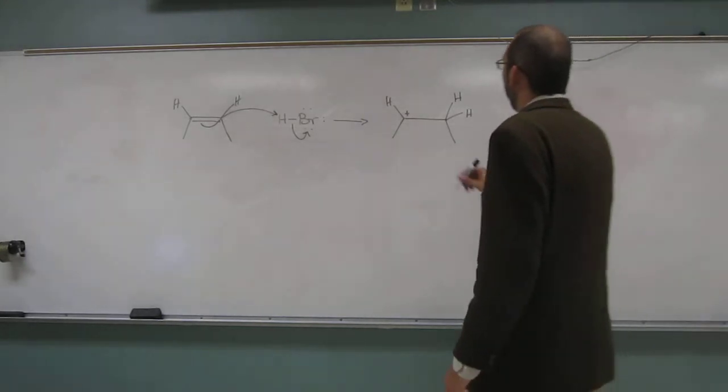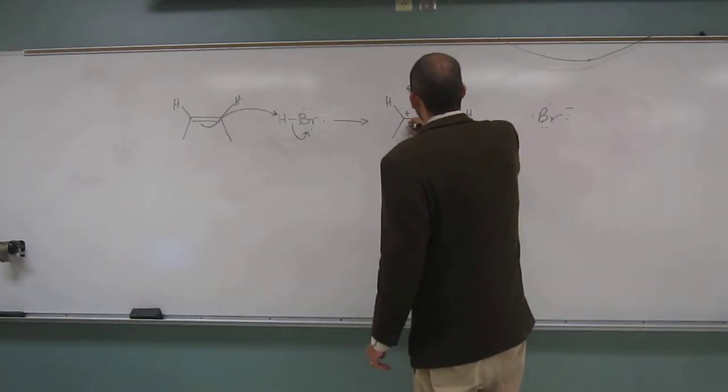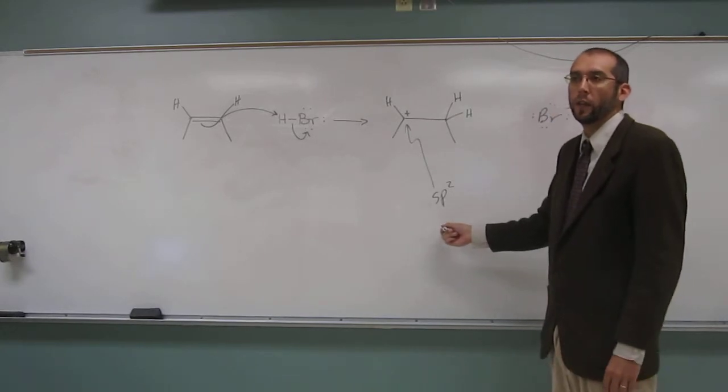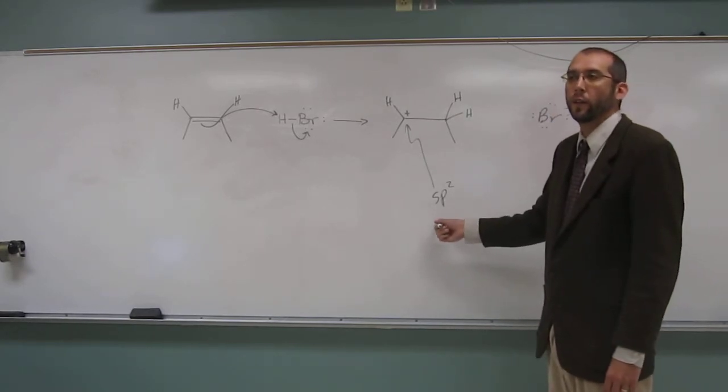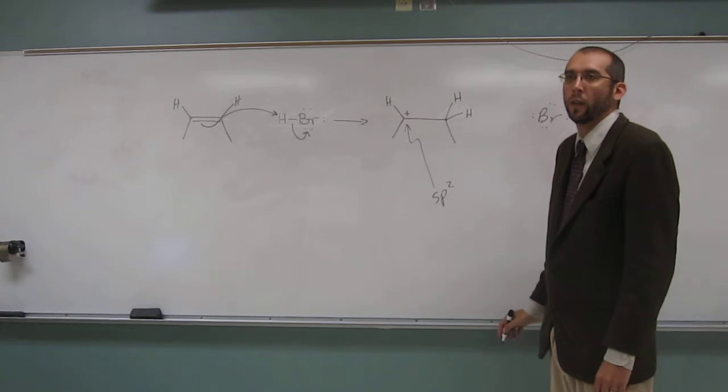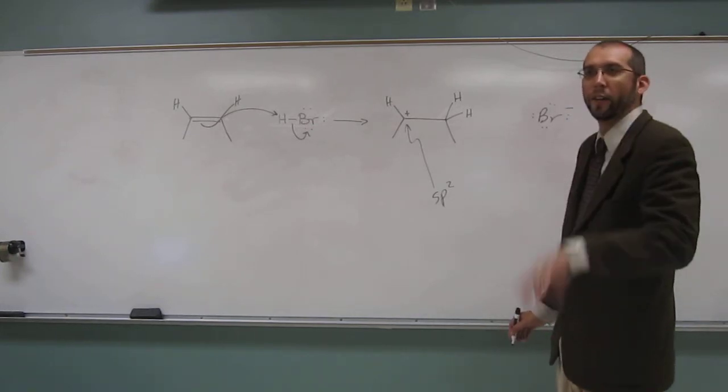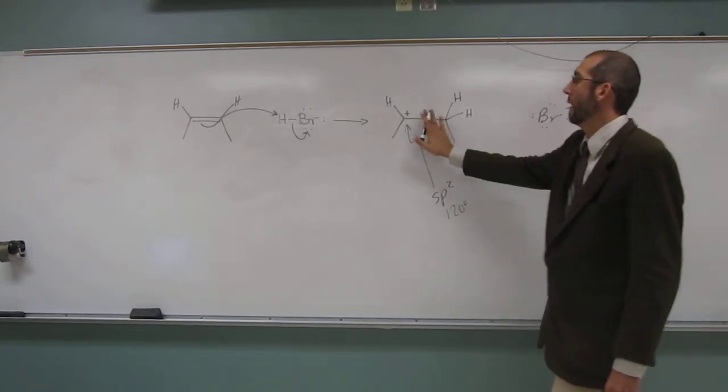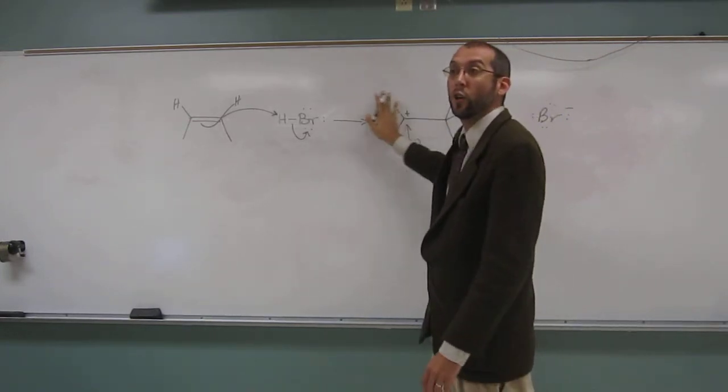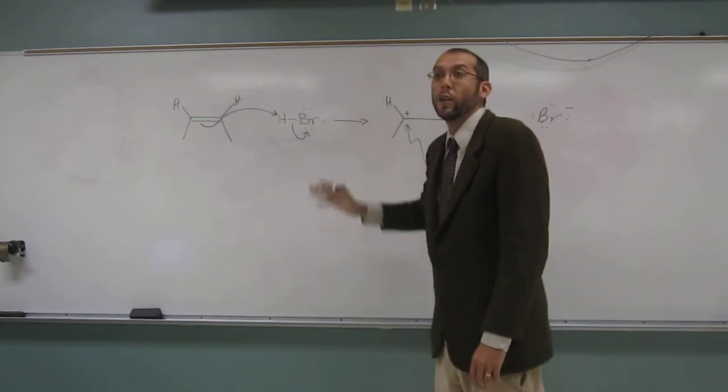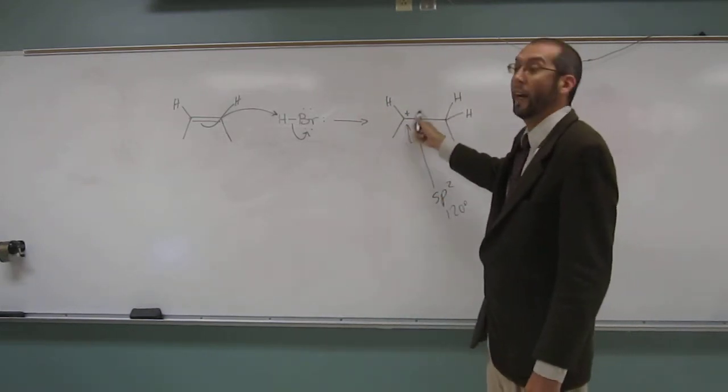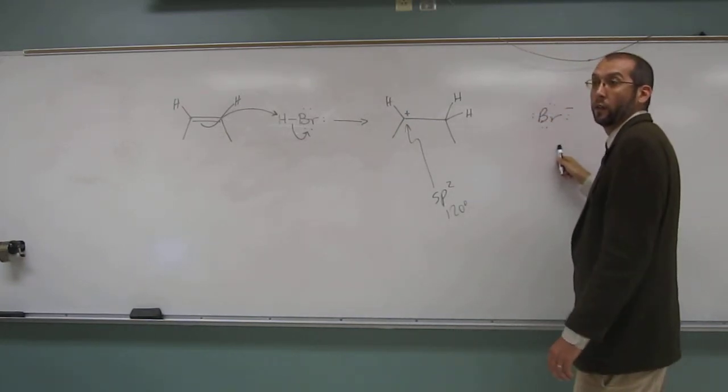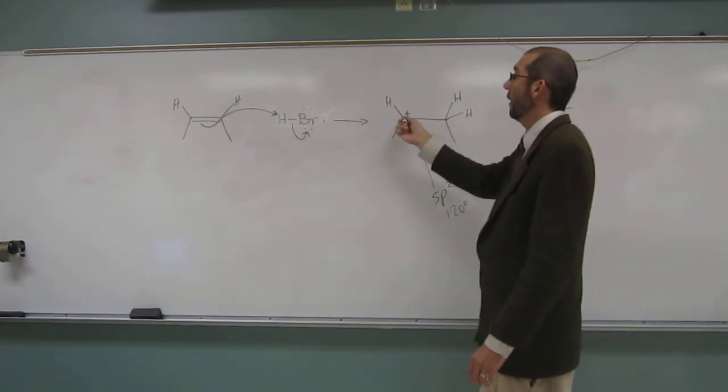So now, this carbon atom here is sp2 hybridized. So what is the bond angle if it's sp2 hybridized? Say it out loud. 120. 120, right? 120 degrees. So that means that this is trigonal planar. So here we have an electrophile that's trigonal planar and a nucleophile over here.